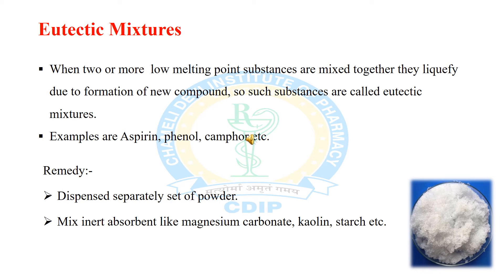Examples of eutectic substances include aspirin, phenol, camphor, and menthol. These substances can be dispensed by two methods. The first method is to dispense a separate set of powders, with direction that one set of each kind shall be taken as a dose. The second method is to mix an equal amount of any inert absorbent like magnesium carbonate, kaolin, or starch, then blend it lightly with a spatula on a sheet of paper.